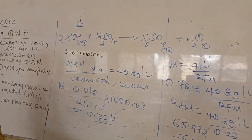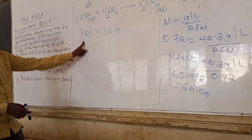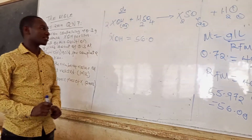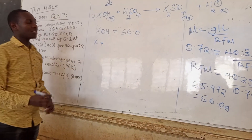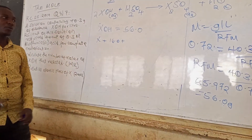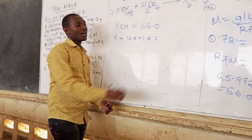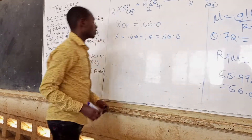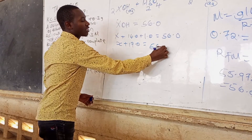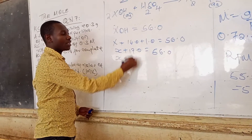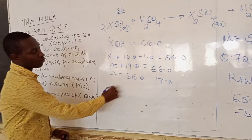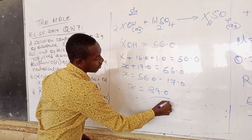We want to calculate the value of X. The total RFM of X hydroxide is 56.0. We say: X plus the molar mass of oxygen, which is 16.0, plus the molar mass of hydrogen, which is 1.0, equals 56.0. So X plus 17.0 equals 56.0. Therefore, X equals 56.0 minus 17.0, which gives us X equals 39.0.